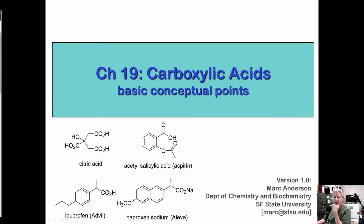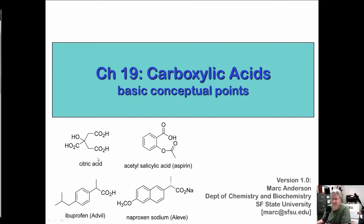We are entering chapter 19 now, which continues the theme of carbonyls. Now we're going to talk about the carboxylic acid functional group. Some of this is also related to esters — we're entering the conversation of carboxylic acids and carboxylic acid-like functional groups. Here are a couple of examples: citric acid is present in citrus fruits like oranges and limes and contributes to their acidity.